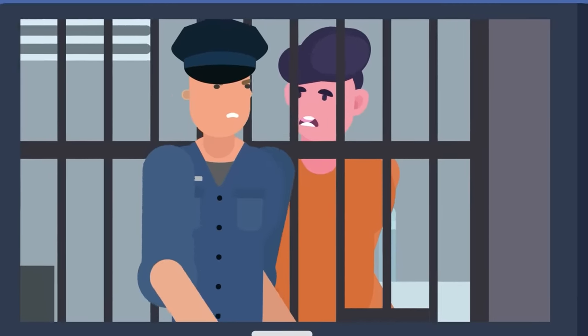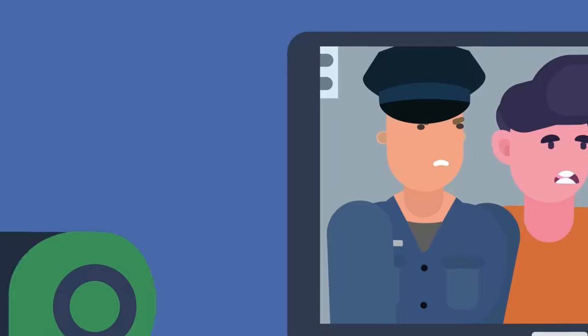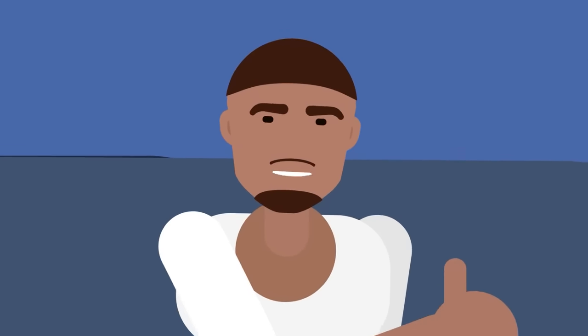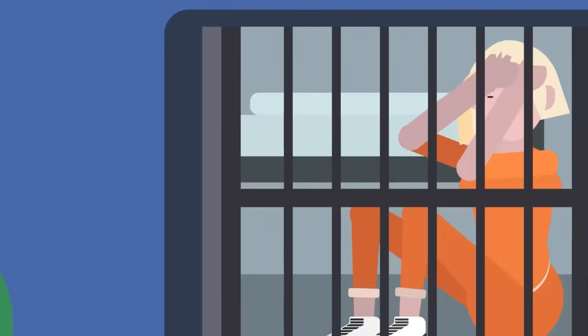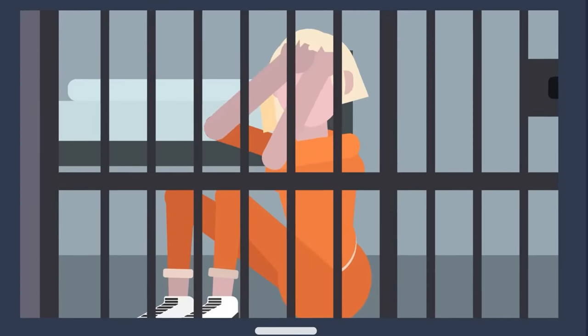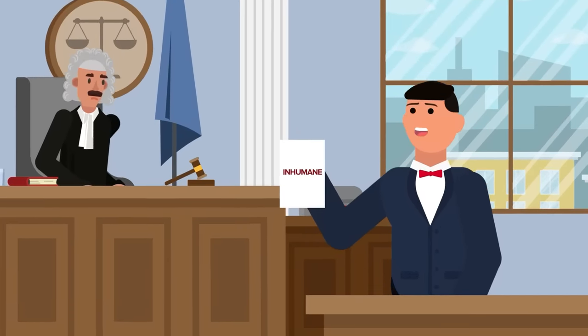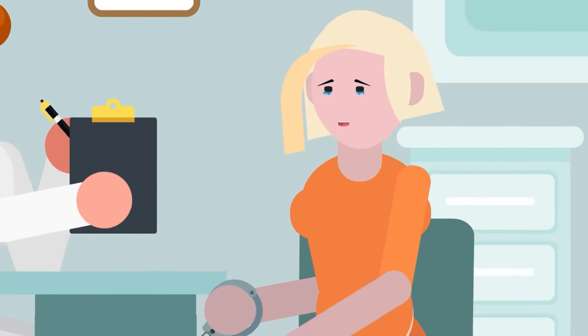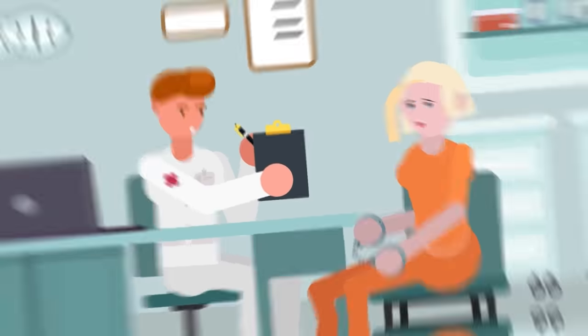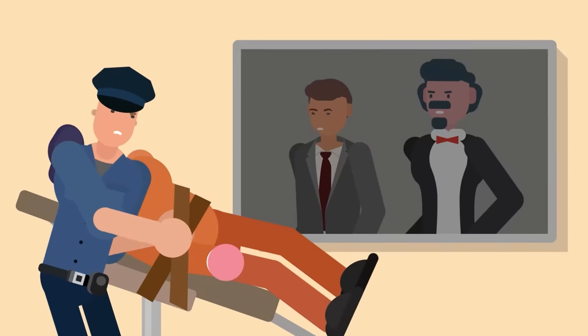Female inmates also tend to be on death row for longer than males. Although you might think this is a good thing, that's not necessarily the case. For both males and females, isolation takes a toll on the mental state of the individual. This is one of the reasons that solitary confinement is seen as inhumane. Since women stay on death row longer, the strain on their mental health becomes greater and greater, meaning female death row inmates are under torturous conditions longer than males.